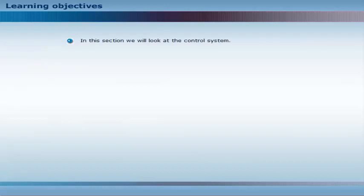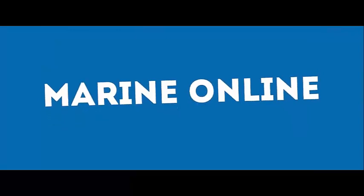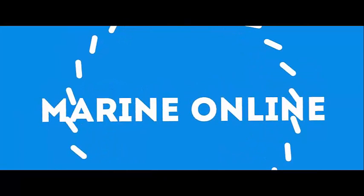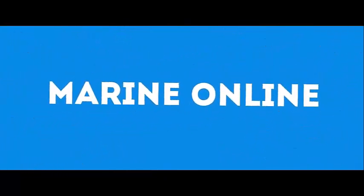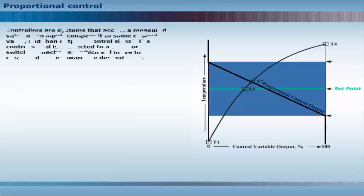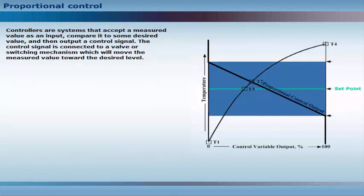In this section, we will look at the control system. Controllers are systems that accept a measured value as an input, compare it to some desired value, and then output a control signal. The control signal is connected to a valve or switching mechanism which will move the measured value toward the desired level.